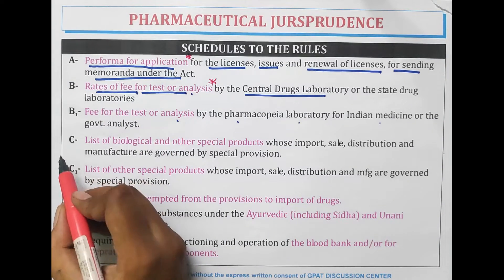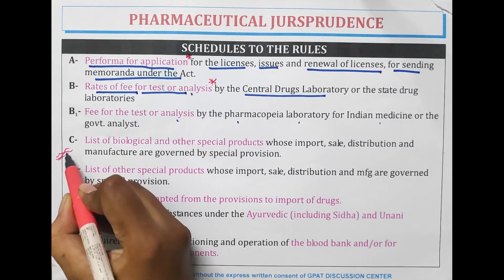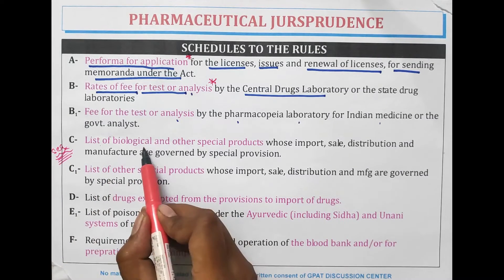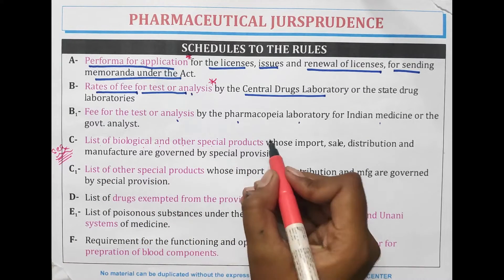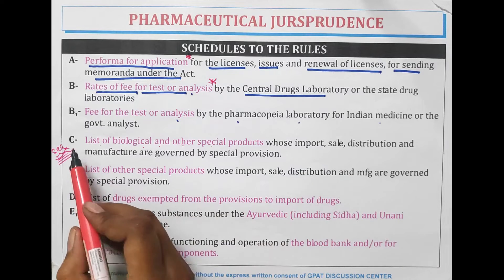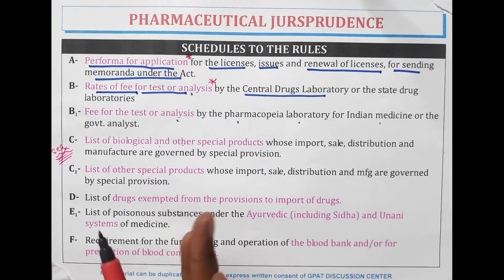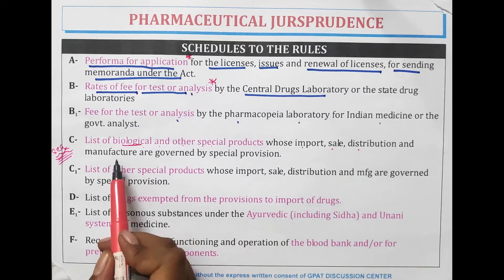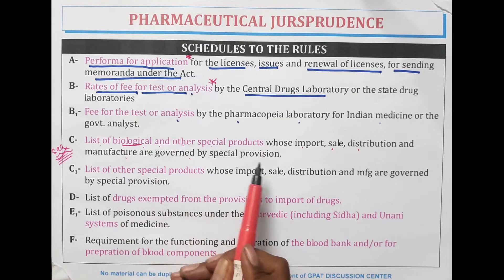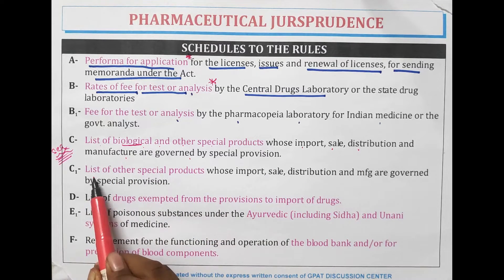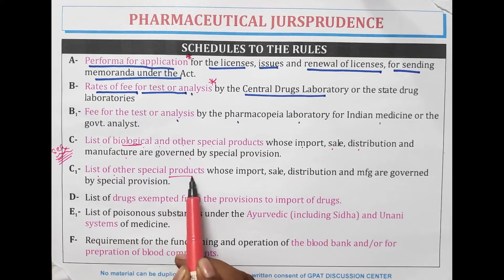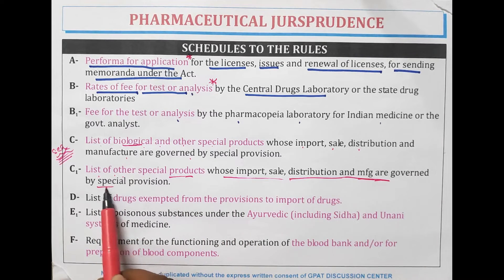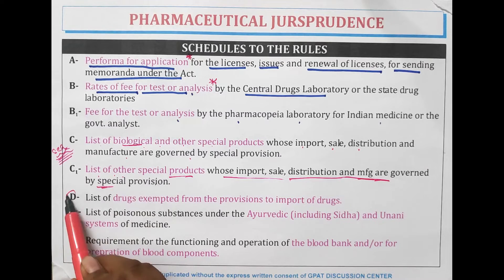Schedule C — C for biological. It is the list of biological and other special products. Schedule C contains biological products whose import, sale, distribution, and manufacture are governed by special provisions.